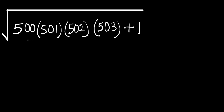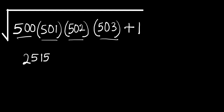Hello, in this video we are going to evaluate this without making use of a calculator. We have 500 times 501 times 502 times 503, plus 1 — all under a square root. The answer is simply 251,501, and we are going to evaluate this without making use of a calculator. Let's get started.